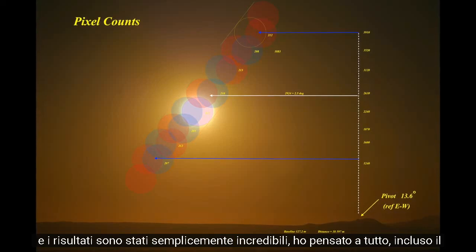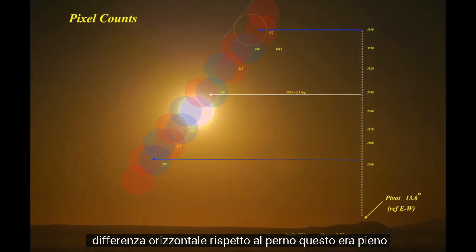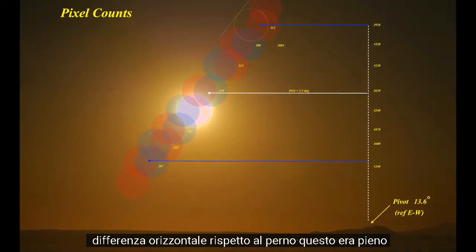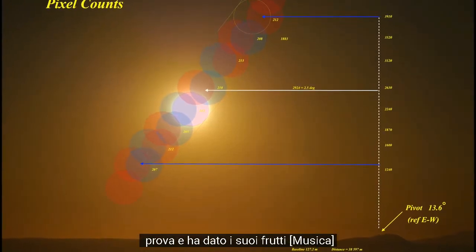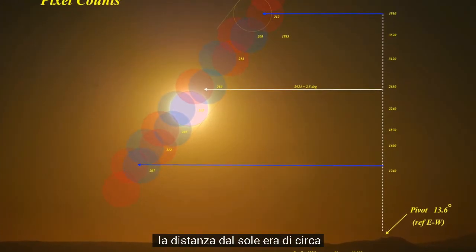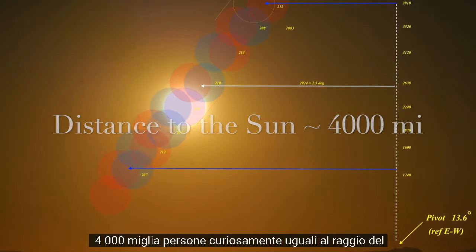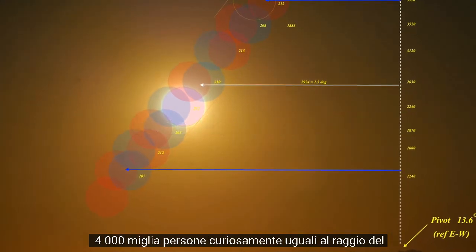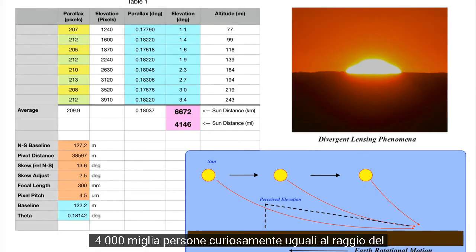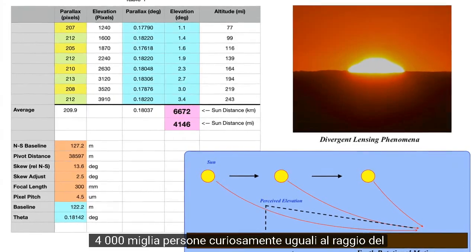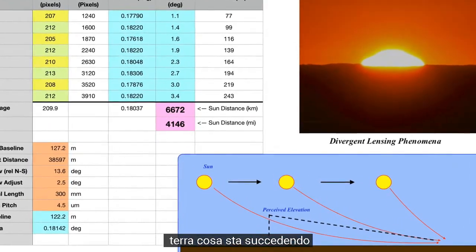I had thought of everything, including the horizontal difference relative to the pivot — this was foolproof and it paid off. The distance to the Sun came out to about 4,000 miles — curiously, the same as the radius of the Earth. What is going on?